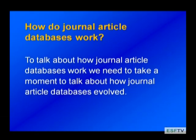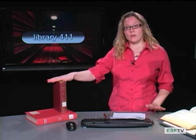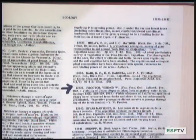To talk about journal article databases, we need to talk a little bit about the history of them. In the past, when you would search for journal articles, you would use print journal indexes and abstracts. For example, one is called Zoological Record, which dates back to 1864. From the mid-1800s until the late 1900s, people would have to go to these print volumes, look up their subject, and find their journal articles. Let's take a look at the inside of one of these to show how people used to do journal article searching.